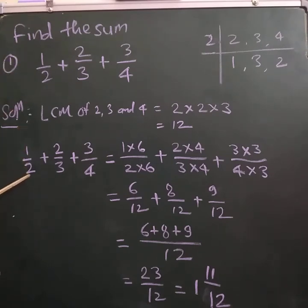Now we have to make the denominators 12 of each fraction. So we have to make equivalent fractions. For the fraction 1/2, we have to multiply both numerator and denominator by 6. So 1 × 6 divided by 2 × 6.